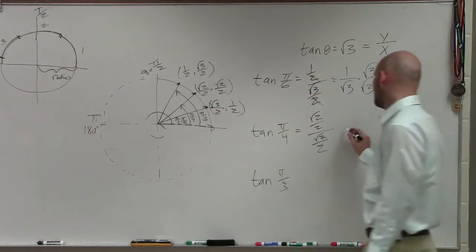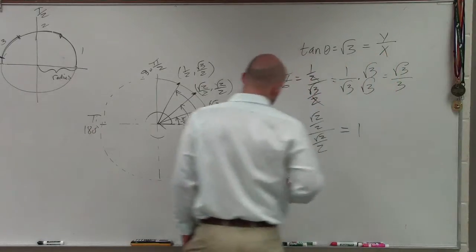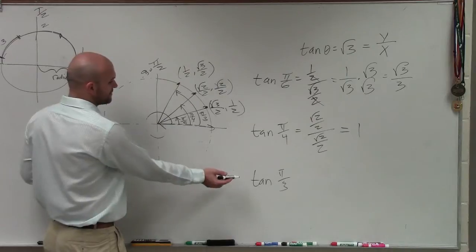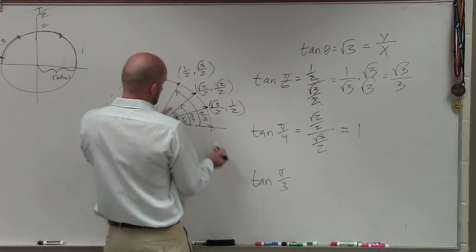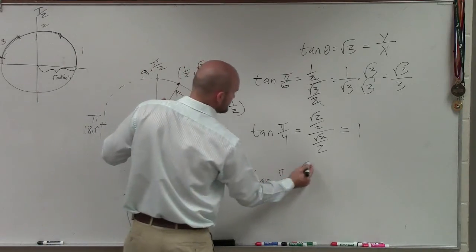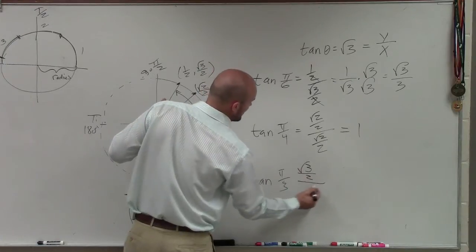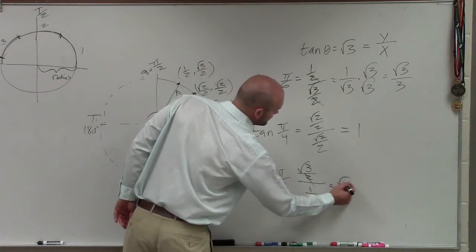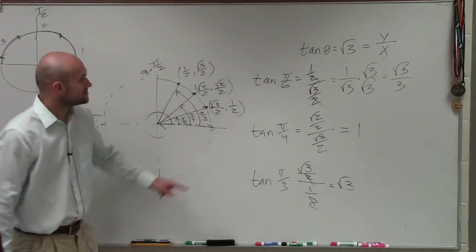We already know this simplified to 1, right? So then my last real option is, well, what about the square root of 3? Or π over 3, I'm sorry. Pi over 3 is this point. So it'd be square root of 3 over 2 divided by 1 half. Well, again, the 2's divide out.